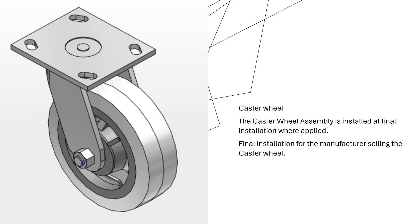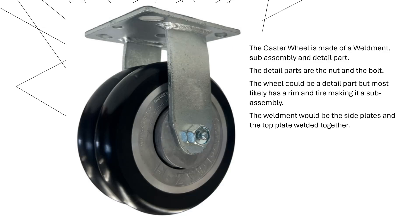Another example would be a cast iron caster wheel assembly — it might go on a toolbox or a tool cart. At that point it would be a sub-assembly going onto the tool cart. When the manufacturer makes the caster wheel, that is their final installation. The caster wheel itself is made up of a few components — sub-assemblies, details — for example the nut and bolt would be individual components.